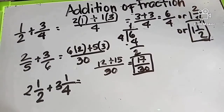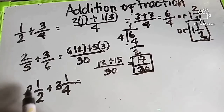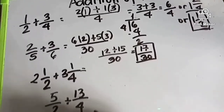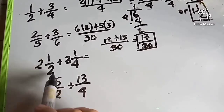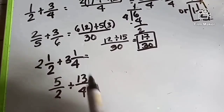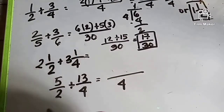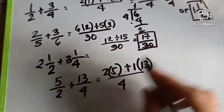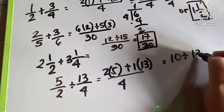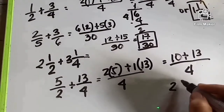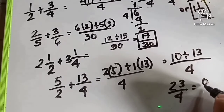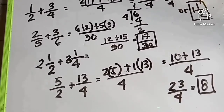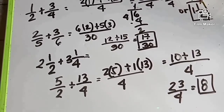So ganito naman: 2 and 1 half plus 3 and 1 fourth. Convert: 2 times 2 is 4, plus 1, will become 5 over 2. 3 times 4 is 12, plus 1, is 13 over 4. The LCD will become 4. 4 divided by 2 is 2, times 5. 4 divided by 4 is 1, times 13. So 2 times 5 is 10, plus 13 divided by 4. The answer is 23 over 4.